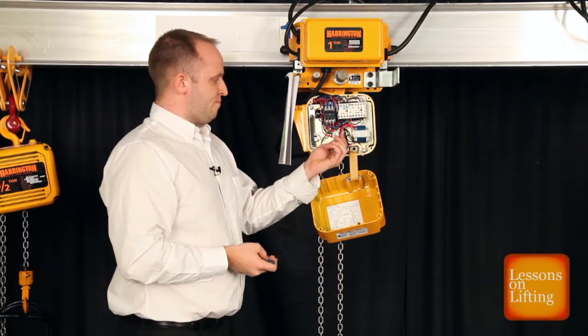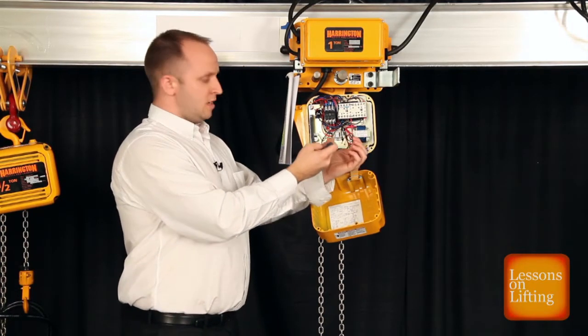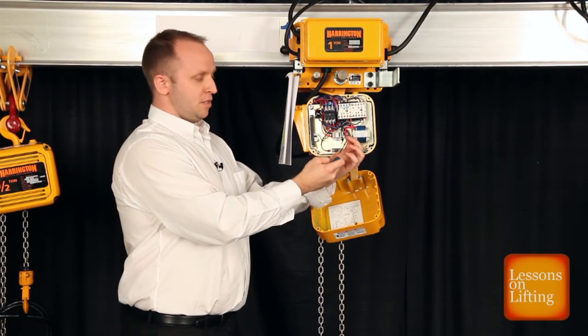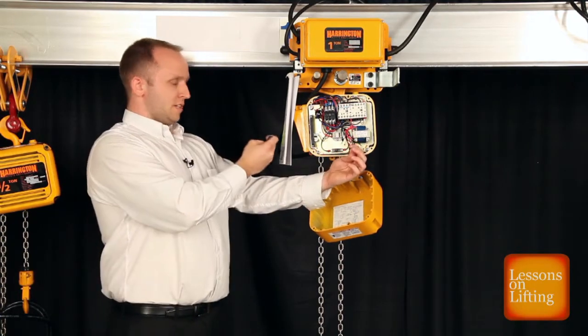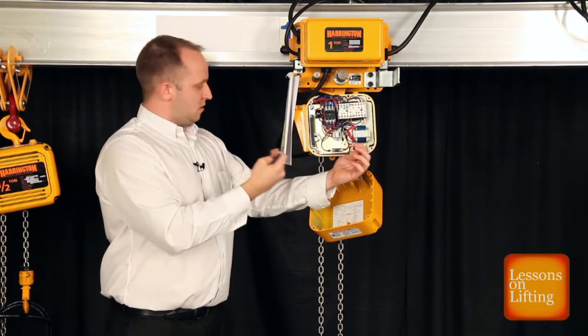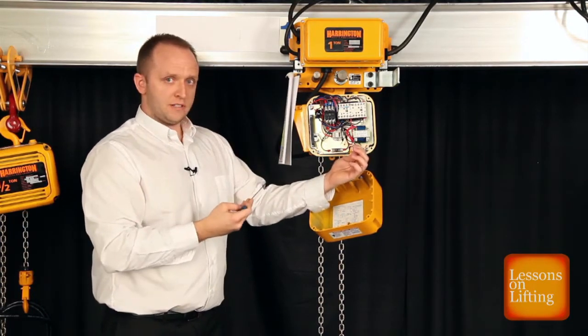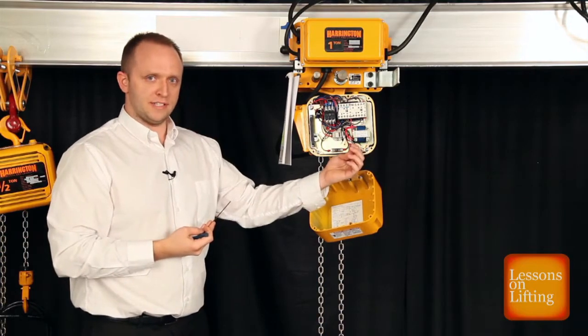So from this point, I would identify which wire, pick one, identify the label on it, this one happens to be U1, reference the configuration on my wiring diagram that I need to end up with, and attach that where the diagram tells me to. And I'll do that for all four wires, and then we'll be ready to move on to the next step.